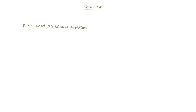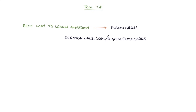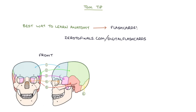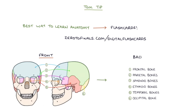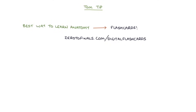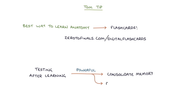A final Tom tip: the best way to learn anatomy is by using flashcards. You can find flashcards to test yourself on the information we've just been through at ZeroToFinals.com/digital-flashcards. Keep running through the flashcards until you can easily recall each answer, and when you can recall all the basic bones of the skeleton, you know you're ready to move on to learning each bone and joint in more detail. Testing yourself shortly after learning something is an extremely powerful way to consolidate that information in your memory and retain it longer.